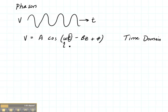This right here is the angular frequency, given in radians per second. This is the time given in seconds. This is the propagation constant given in radians per meter, and this is the distance traveled in meters. The phase shift is also given in radians.